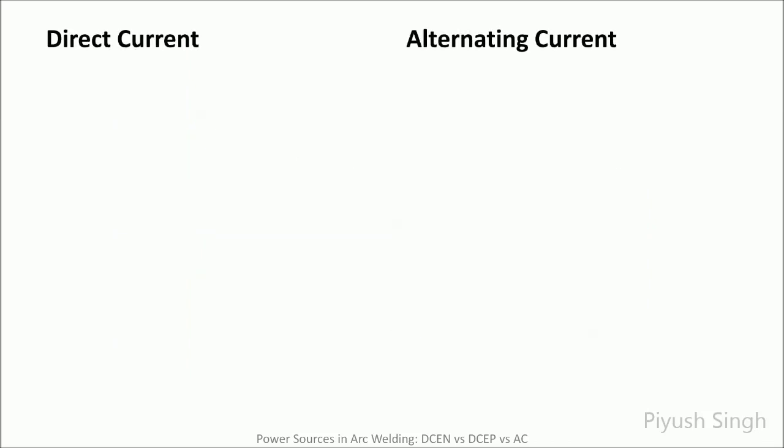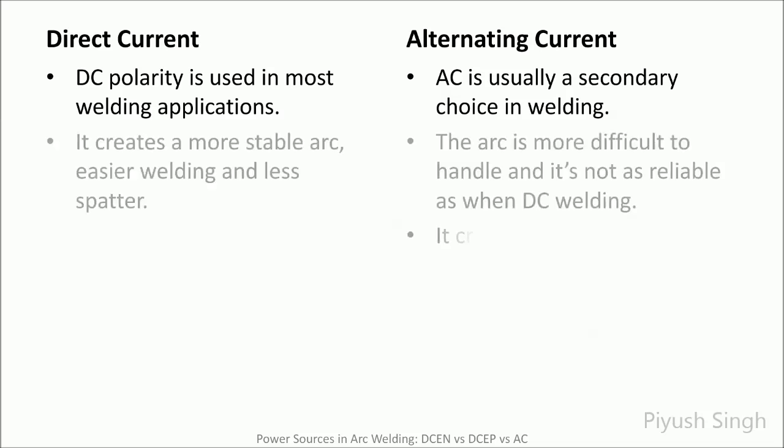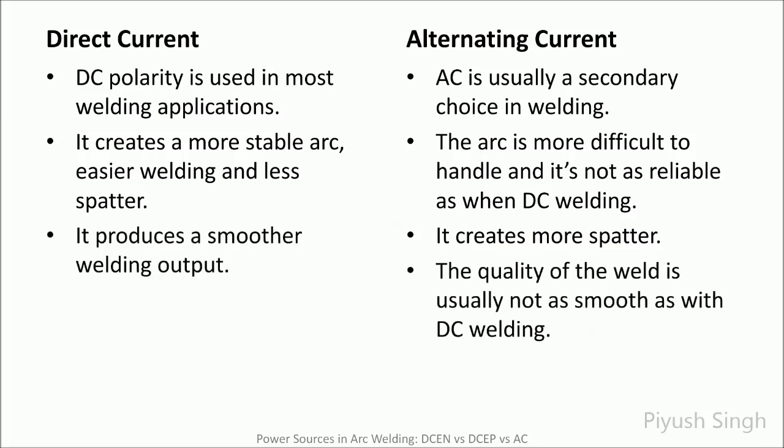In comparison with AC power sources, DC power sources are the more preferred choice for arc welding. DC produces a more stable arc as the current is unidirectional, and hence produces a smoother welding output with less spatter. In case of AC, the current magnitude reaches zero several times per second depending upon the frequency, due to which the arc tends to extinguish and hence becomes difficult to handle. The periodical change in direction of the current makes the arc unstable, resulting in higher spatter and inferior weld appearance.